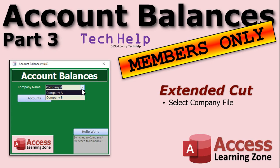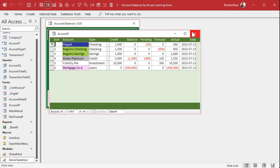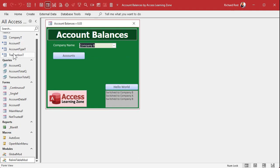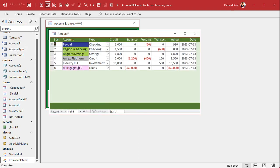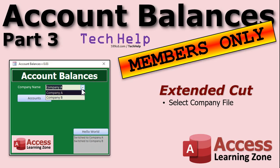In the extended cut, we're going to make it so that switching back end files isn't a manual process. I'm going to teach you using company A and switch to company B, which is my real numbers — I just want to click a dropdown and have Access do all the work. So here it is: I'm in company A, go to my accounts list — there's company A. Switch to company B — Access relinks the back end files automatically. Now if I go into accounts, there's company B. It's VBA code, not a ton of it, covered in the extended cut for members.